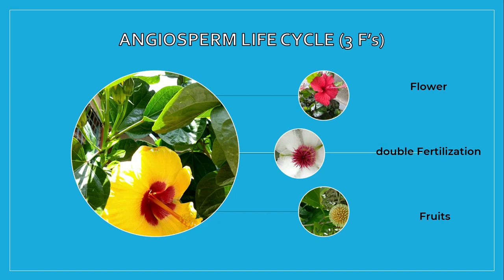We said earlier that seeds develop inside the ovule, while the ovary of the flower develops into a fruit, which protects and encloses the seeds. When mature, the seeds are dispersed by wind and animals and are transferred to other areas. Fertilization also triggers hormonal changes that cause the ovary to begin its transformation into a fruit. If a flower has not been pollinated, then the fruit typically does not develop — that's why pollination is so important for fruit development. The entire flower usually withers and falls off.